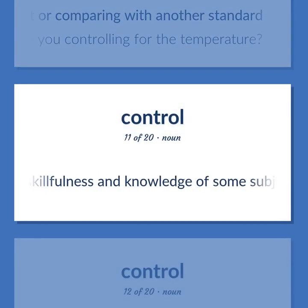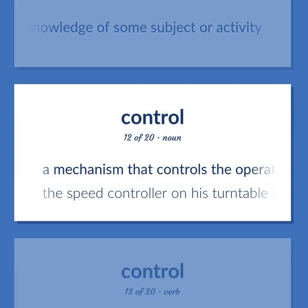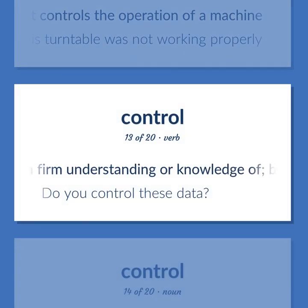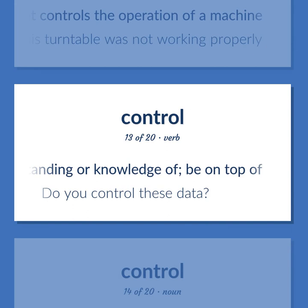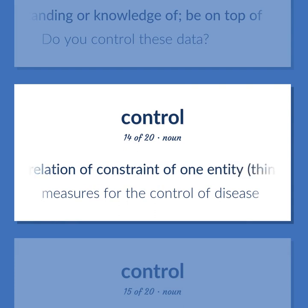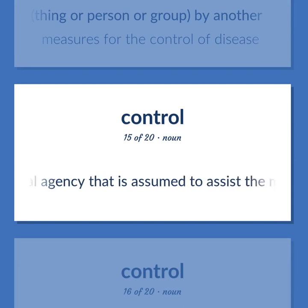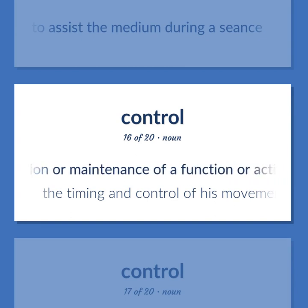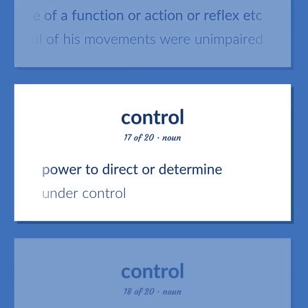Great skillfulness and knowledge of some subject or activity. A mechanism that controls the operation of a machine — the speed controller on his turntable was not working properly. Have a firm understanding or knowledge of; be on top of — do you control these data? A relation of constraint of one entity, thing, or person or group by another — measures for the control of disease. A spiritual agency that is assumed to assist the medium during a seance. The timing and control of his movements were unimpaired. Power to direct or determine — under control.